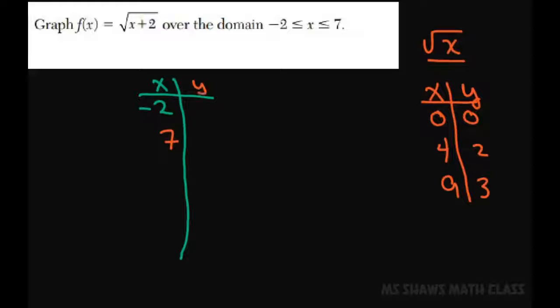So if I plug in negative 2, my f(x) is going to be 0. And if I plug in 7, it's going to be 9. Square root of 9 is 3. So because you have square root of 7 plus 2 equals the square root of 9 equals 3.